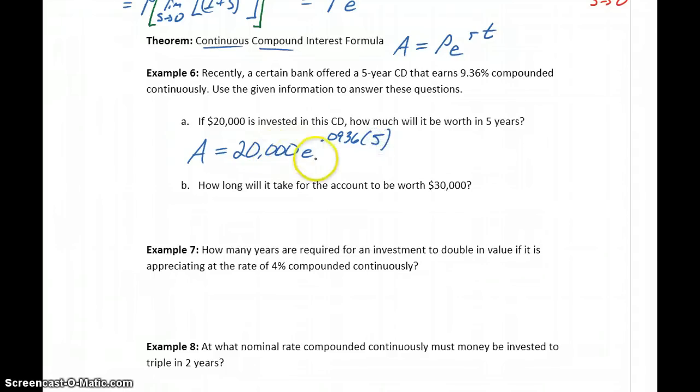So to answer this question, we need to solve the formula A equals $20,000 times e to the 0.0936 times 5. So in this case, solving is simply evaluating the right-hand side of this formula. And we'll come back to Wolfram Alpha in a minute to do that.